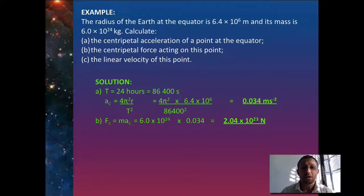However, we're going to do this underneath. So its mass is 6 times 10 to the 24 times 0.034 equals 2.04 times 10 to the 23 newtons. So I've now found my centripetal acceleration. I've also found my centripetal force. Now I want to find my linear velocity.